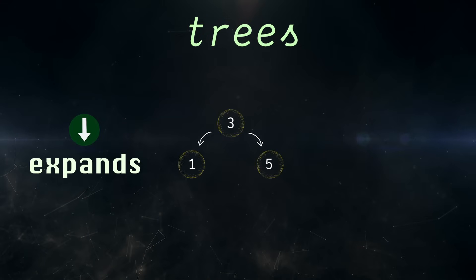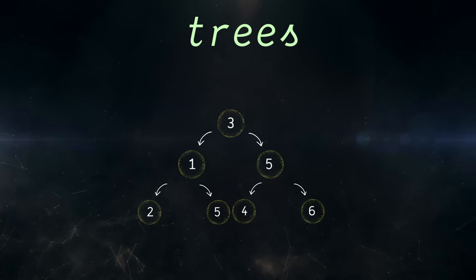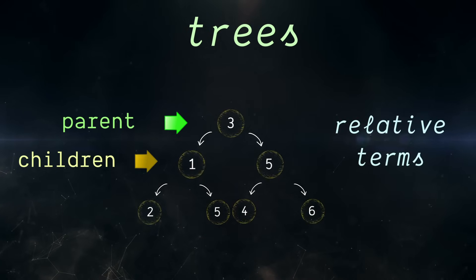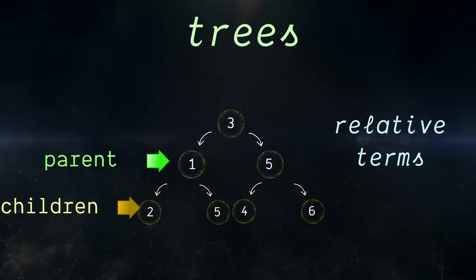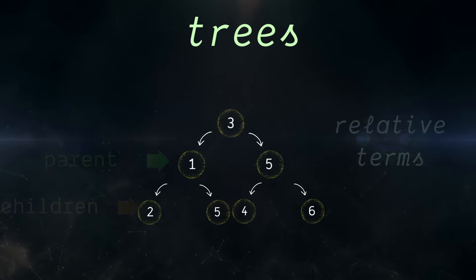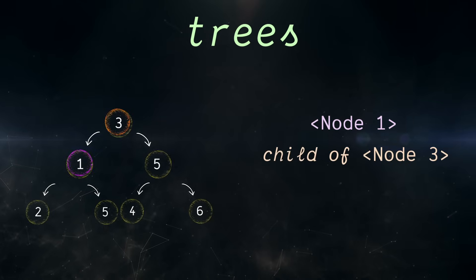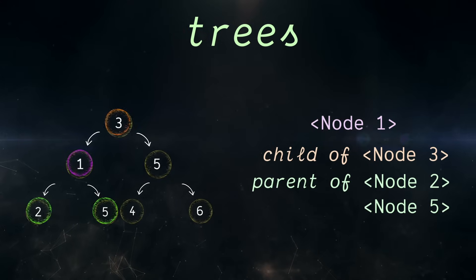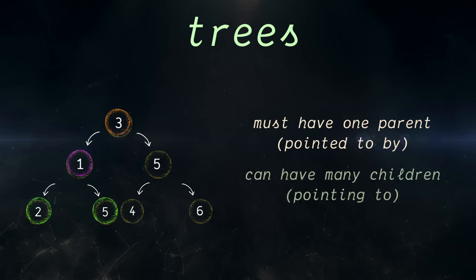They're also made up of parents and children. These are relative terms for nodes and describe where they're located in relation to each other. Relative here means every parent can also be a child. Just think of a family tree. So here, the node with value 1 would be a child of node 3 and a parent of nodes 2 and 5. The one hard rule for trees is that every node can only have one parent, but it can have many children.